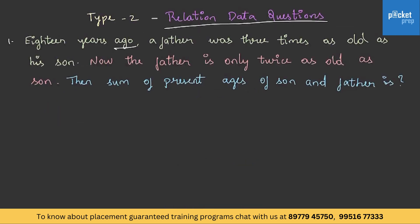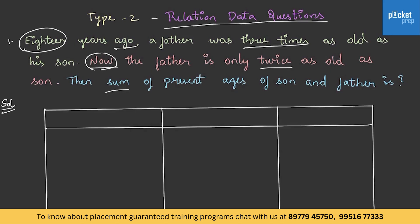18 years ago a father was 3 times as old as a son. Now the father is only twice as old as a son. The sum of present ages of son and father is what? The relationship data between a father and son is given 18 years ago, and the present relationship data is also given. Let us drop the present-age statement in the first column, where the present age of son equals x and father's age equals 2x.